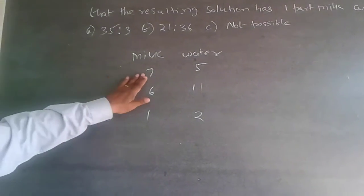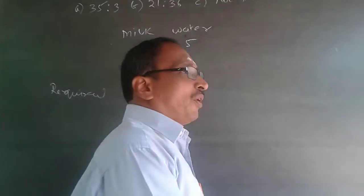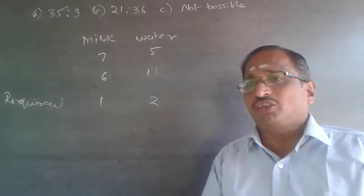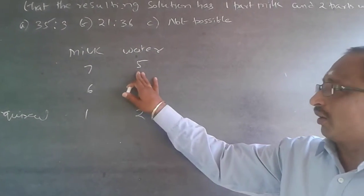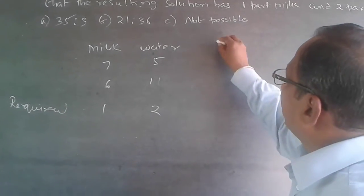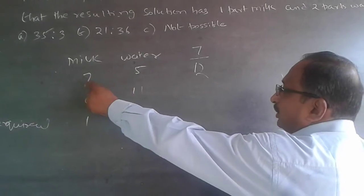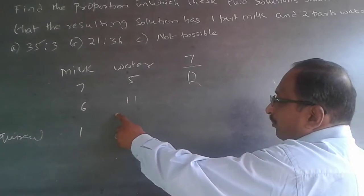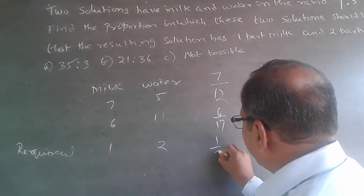Now because these are two items, find out the proportion of only one item, either the milk or the water. I will focus on the proportion of milk. So here the proportion of milk is 7 out of 12. The total quantity is 12 of which milk will be 7. Here it will be 6 by 17, and what I want is 1 by 3.